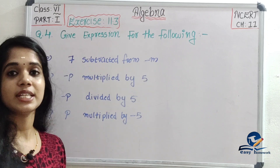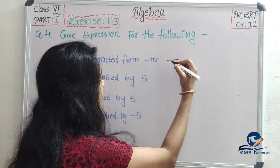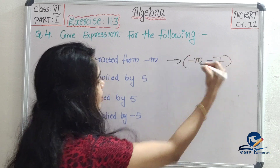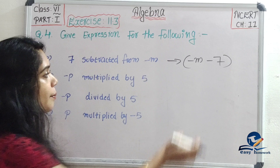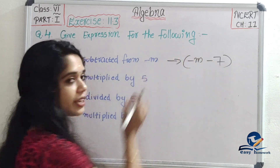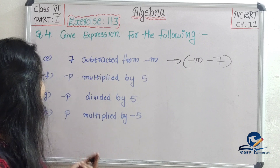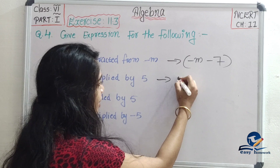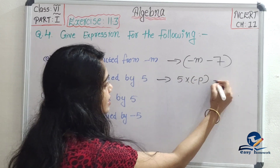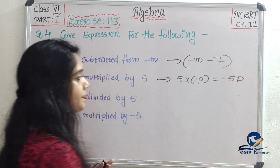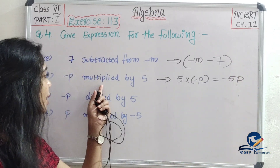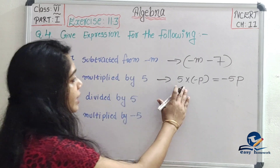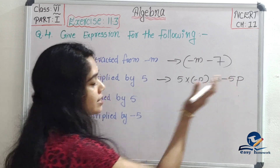Minus m: 7 is subtracted from m, giving minus m minus 7. The next question is minus p multiplied by 5. So 5 into minus p gives the answer minus 5p.